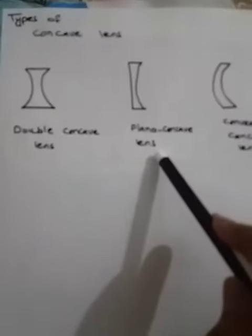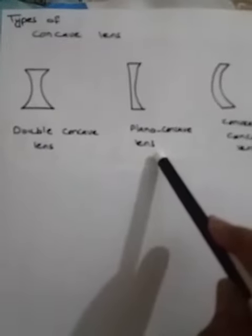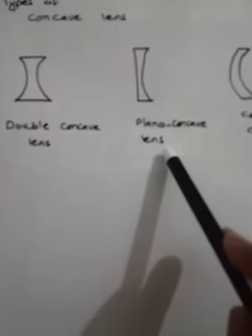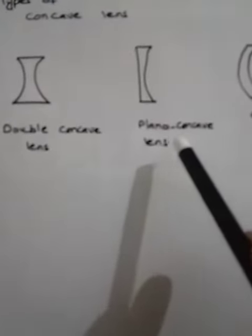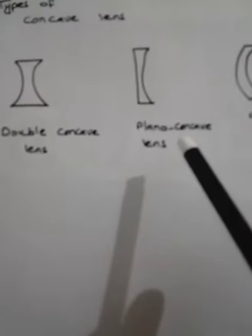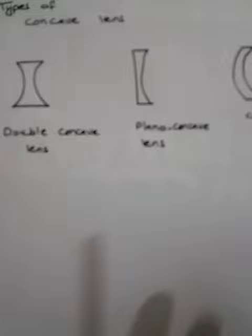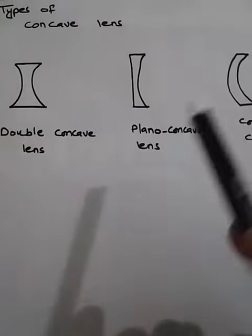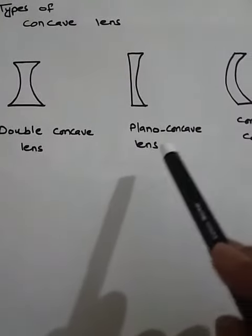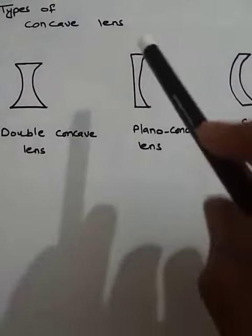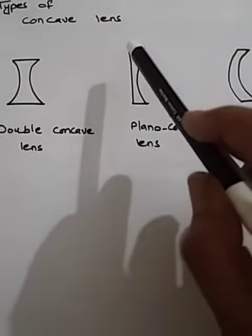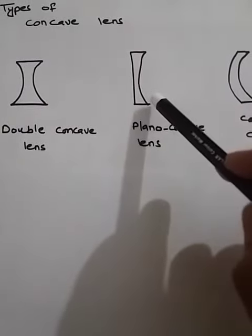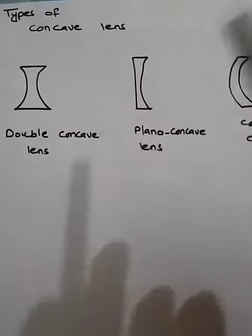The second type of the concave lens is plano concave lens. In this one, one side is plane and the other side is curved inwards.